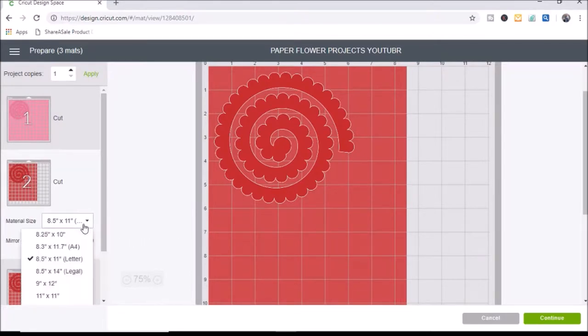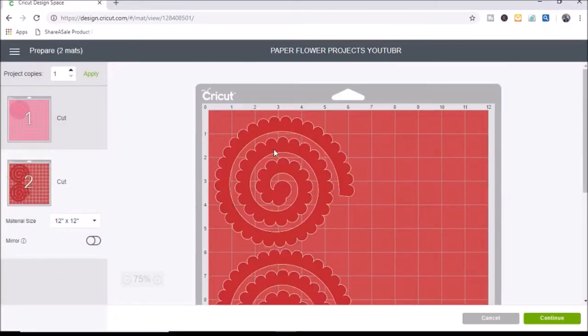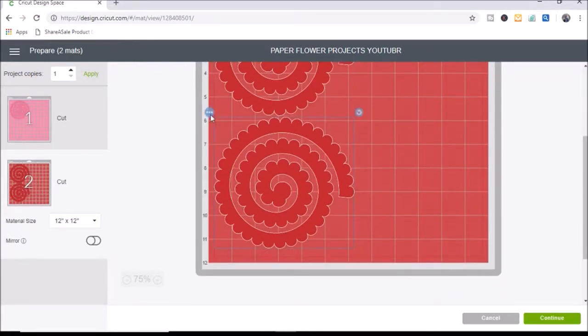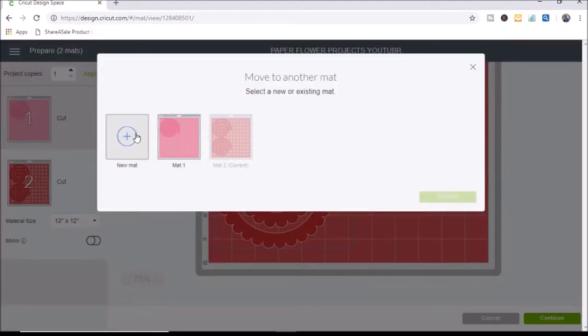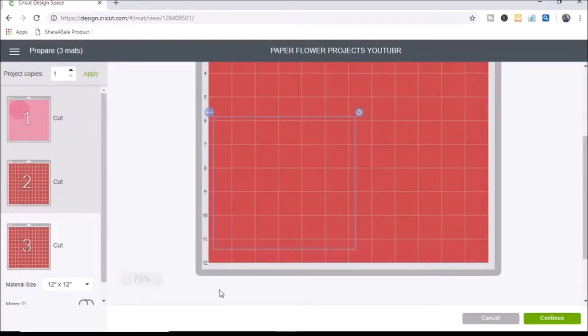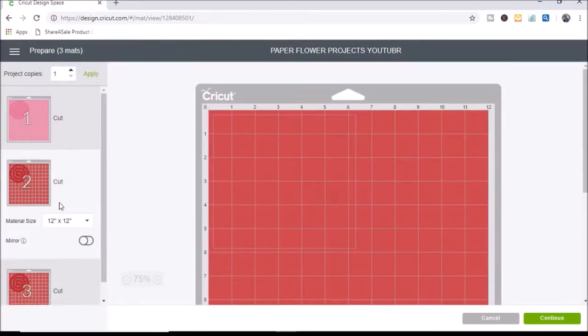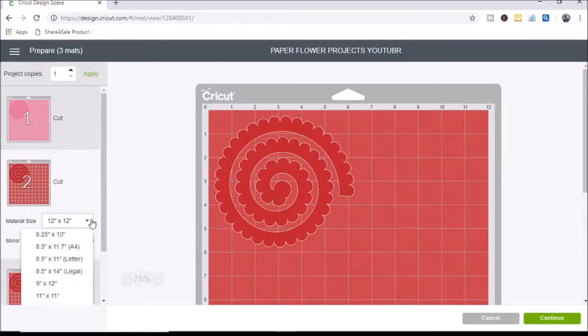Another way you could go back in and change it to another mat, if you keep it at 12 by 12, you can select the flower and select the three dots and hit move to another mat and hit new mat, choose the color and hit confirm. Then that will bring it on to two different mats as well. It's probably just easier just go to 8 and a half by 11 but that's how you switch it. I will just click on continue and have my machine cut these.